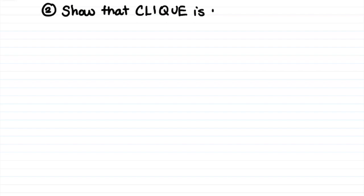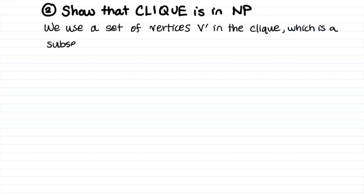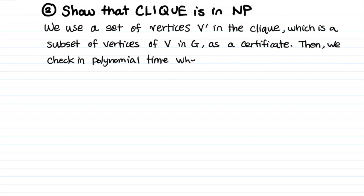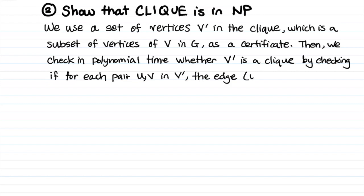Our final step now is to show that clique is in NP. In order to do so, we need to give a polynomial time algorithm to verify its certificate. We use a set of vertices v prime in the clique, which is a subset of the vertices of v in G, as certificate. Then we check in polynomial time whether v prime is a clique by checking if for each pair u, v, which is a pair of vertices in v prime, the edge for u and v belongs to the set of edges e in G.